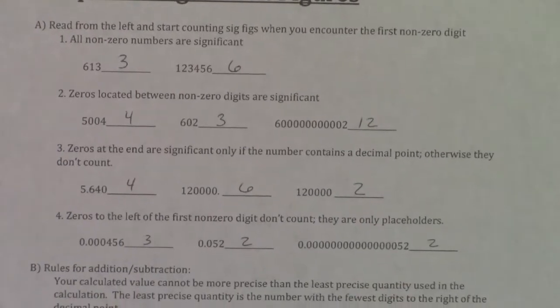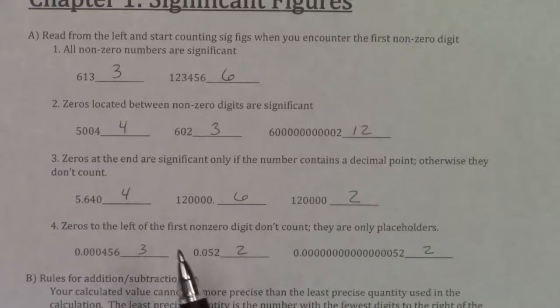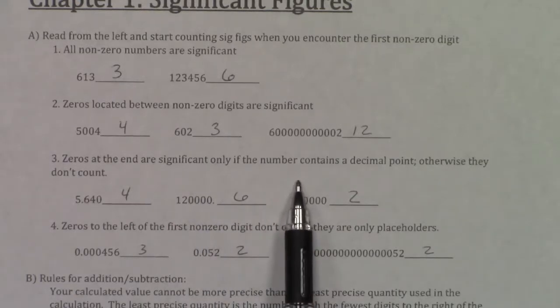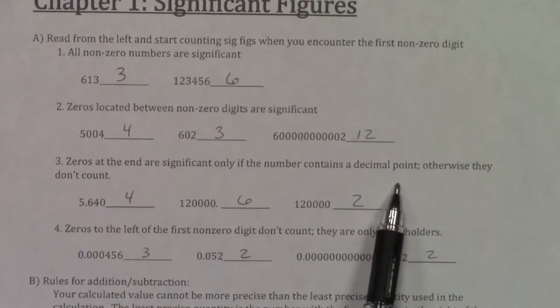However, if we take a look now at number 3, zeros at the end are significant only if the number contains a decimal point, otherwise they don't count.